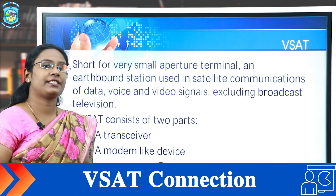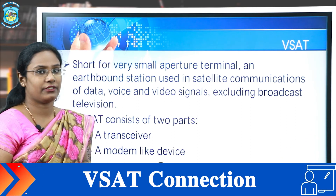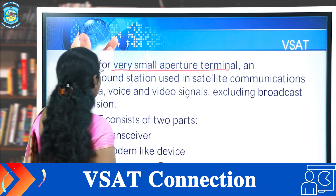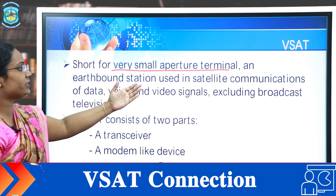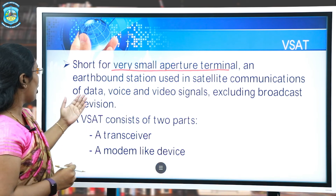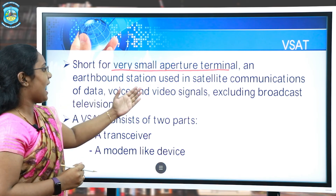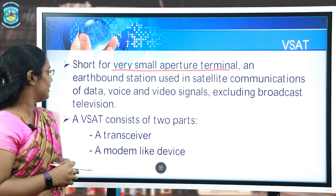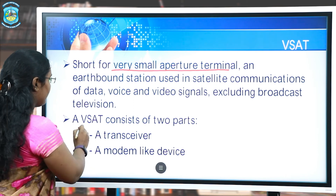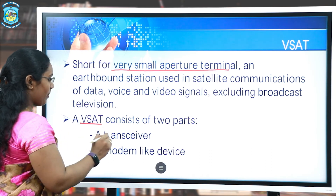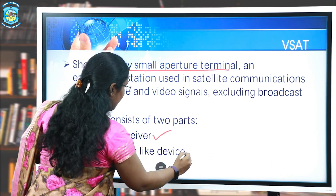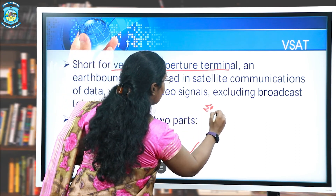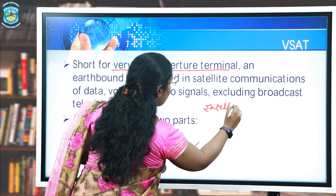The next type of internet connectivity is VSAT, that is Very Small Aperture Terminal. It is an earth-bound station used in satellite communication of data, voice, and video signals. It does not include broadcast television. It also consists of two parts: a transceiver and a modem-like device, similar to what was described in the satellite internet connection.